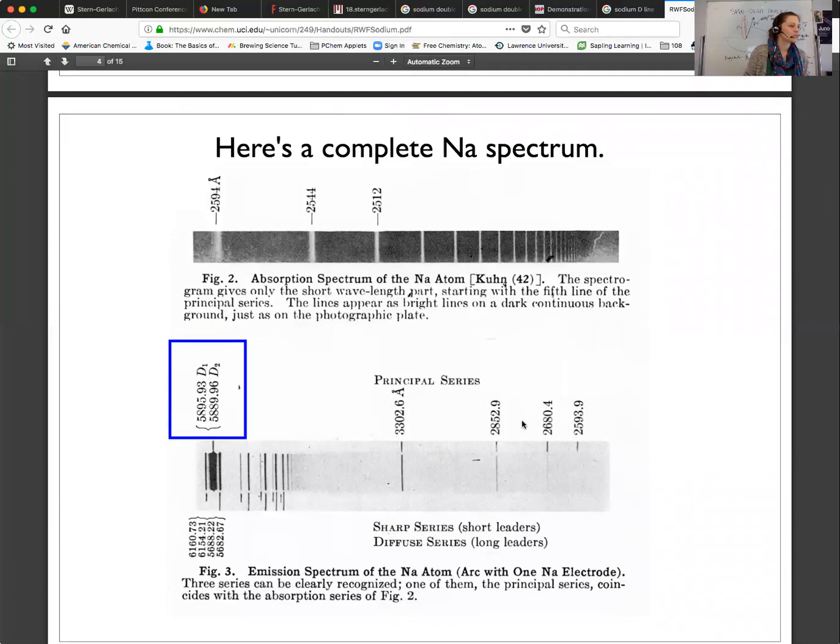So what causes the D-line, or known as the sodium doublet? The principal series were here. And then the short ones were known as the sharp lines. And then the diffuse ones were these because they're thicker. And here you have 589.5 and 588.9. So really close together, the D1 and the D2. So this makes up the sodium doublet.